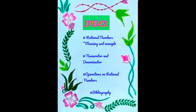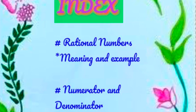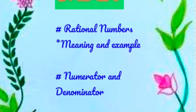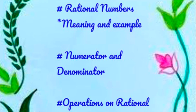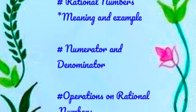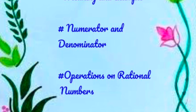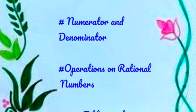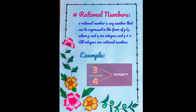The next page is the index. The first title is rational numbers — meaning and example. Next is numerator and denominator. Next is operations on rational numbers. And the last one is bibliography.